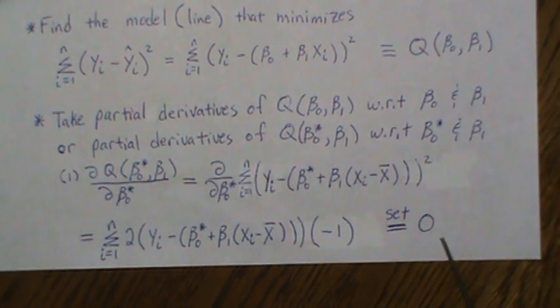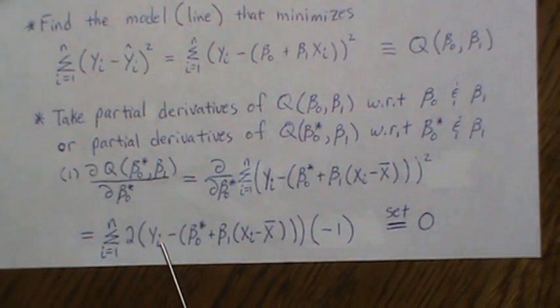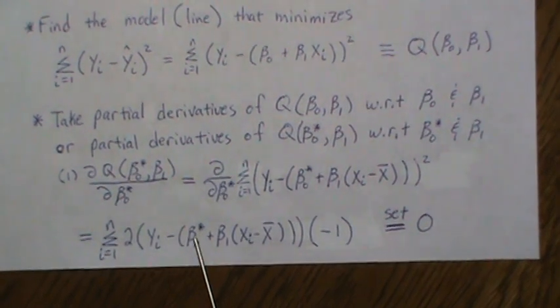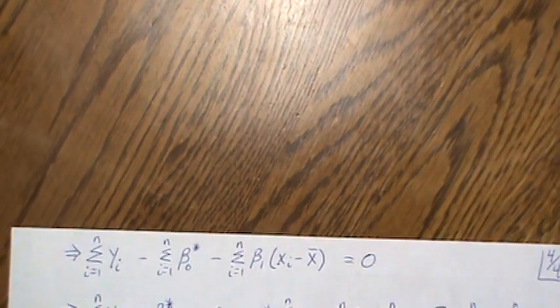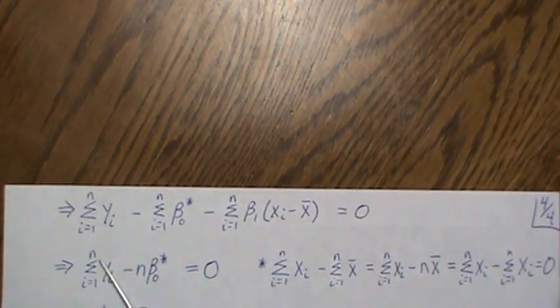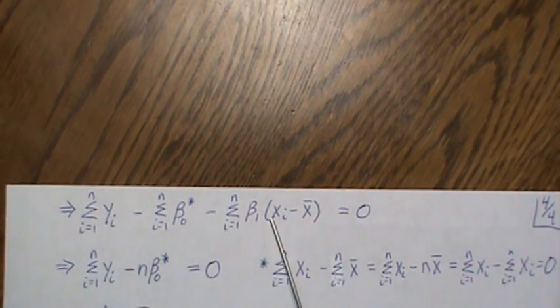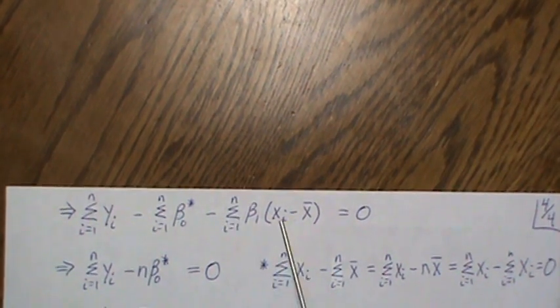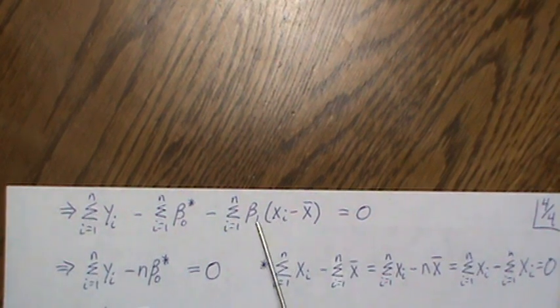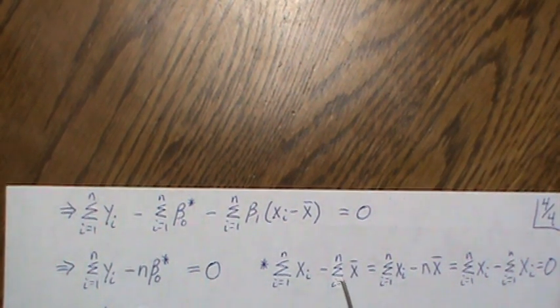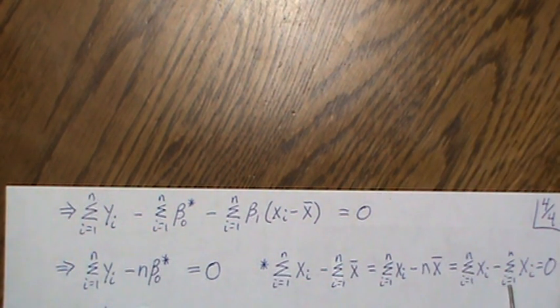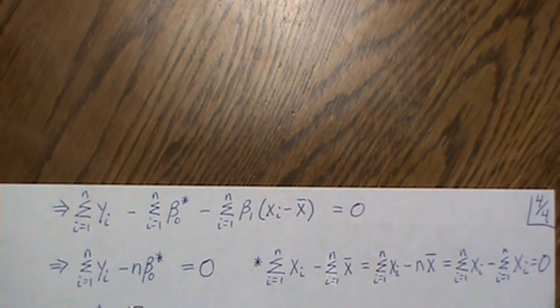We get: sum of y_i minus n*beta-0-star minus beta-1 * sum(x_i - x-bar) = 0. The last term vanishes because sum(x_i - x-bar) = 0. So sum(y_i) = n*beta-0-star, giving us beta-0-star-hat = y-bar.